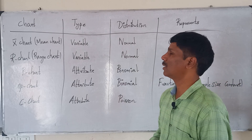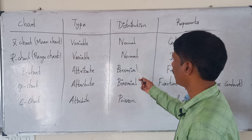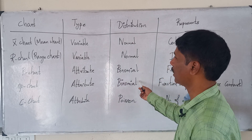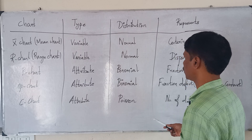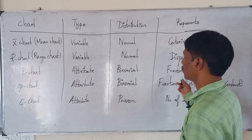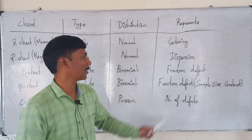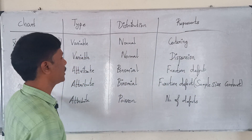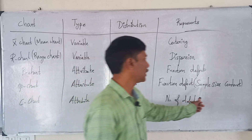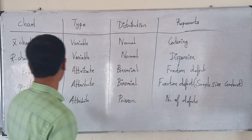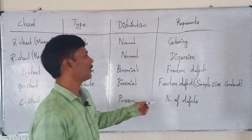The three attribute-type charts are: X-bar chart, R chart, and the attribute type chart. The P chart and NP chart use binomial distribution; the C chart uses Poisson distribution. The P chart represents fraction defective; the NP chart also represents fraction defective but with constant sample size. The C chart represents the number of defects.